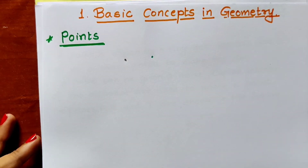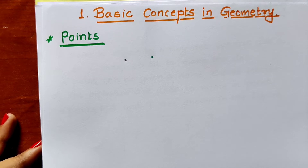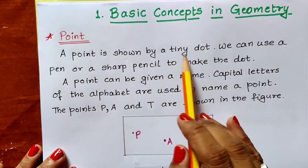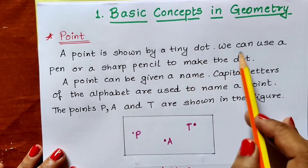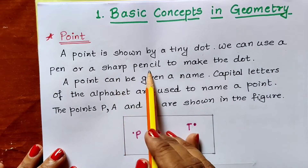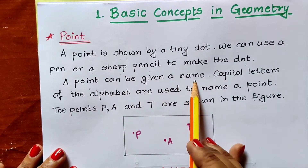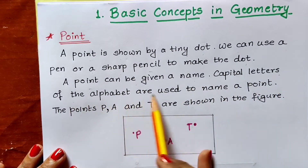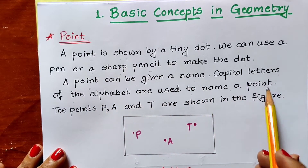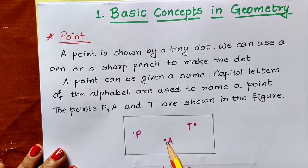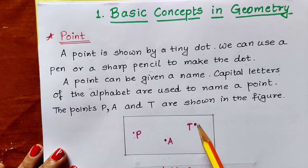Let us see the definition of point. A point is shown by a tiny dot. We can use a pen or a sharp pencil to make the dot. A point can be given a name. Capital letters of the alphabet are used to name a point. In the figure, we can see point P, point A, point T. So capital letters are used to denote a point.